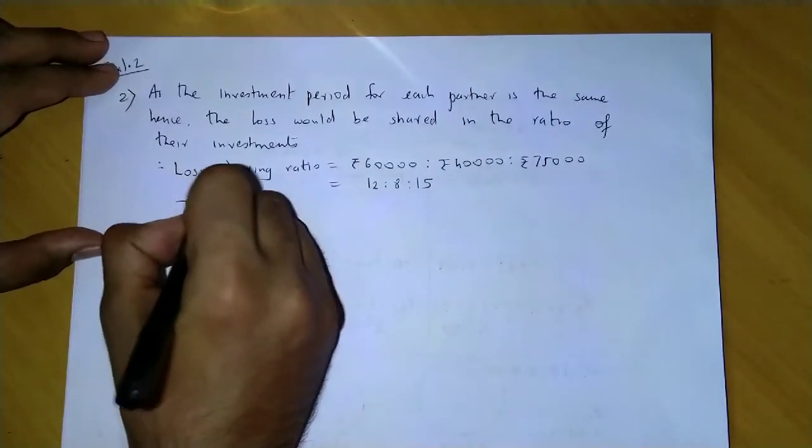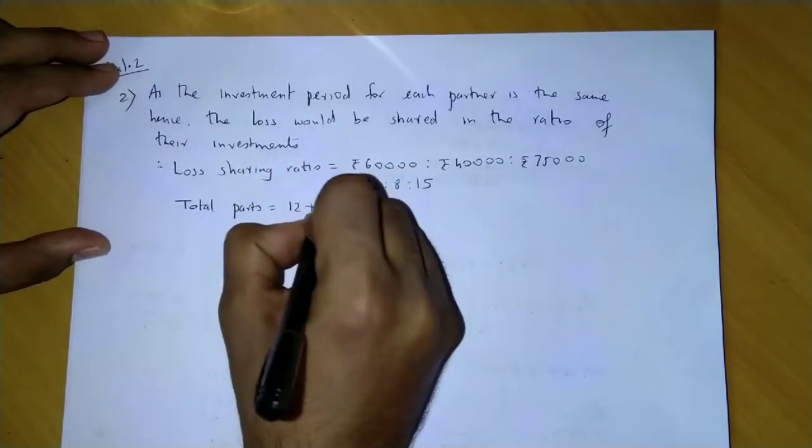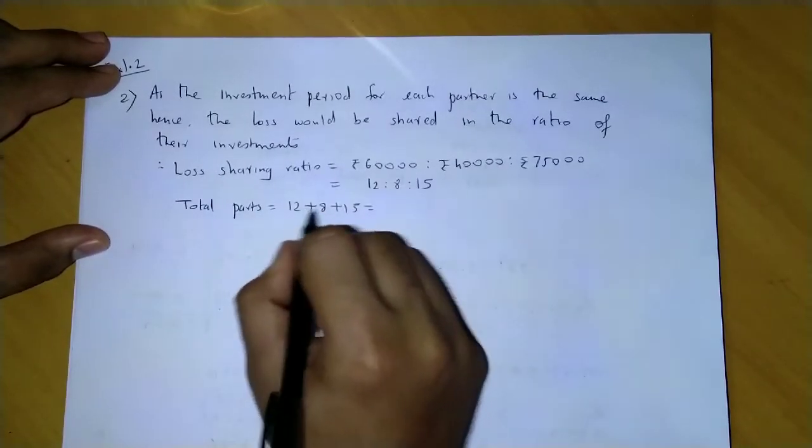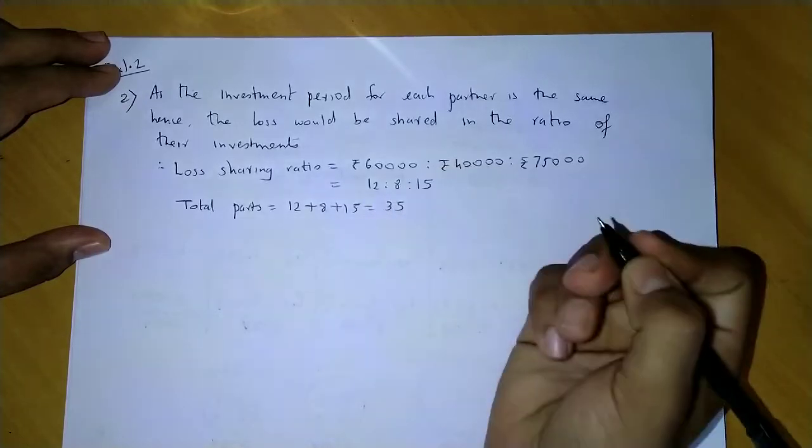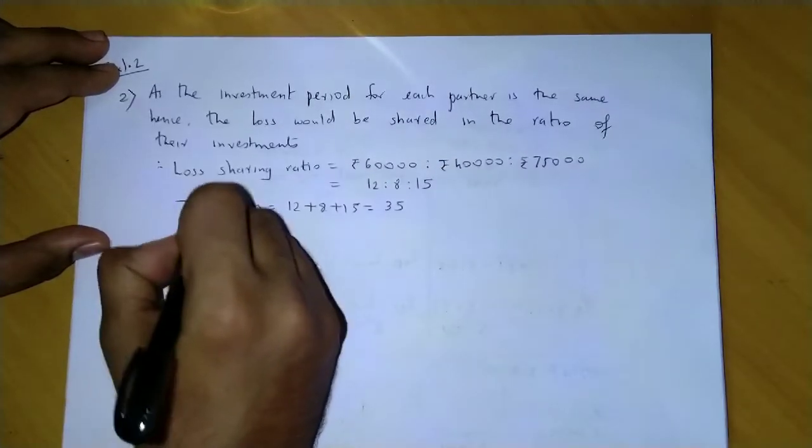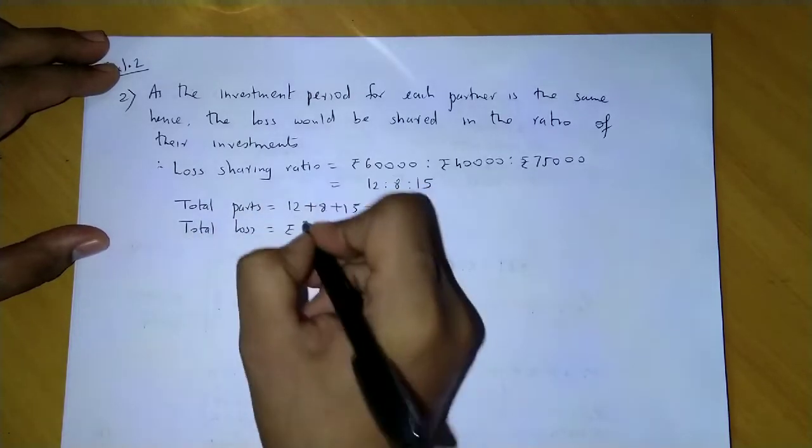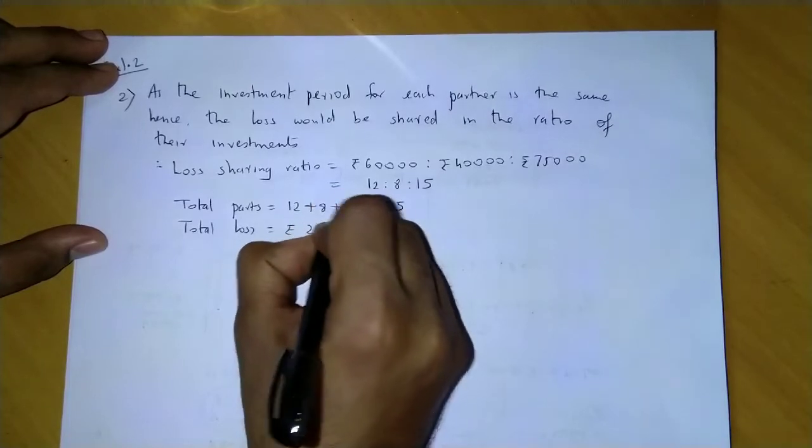Before we write total parts, the total parts are 12 plus 8 plus 15. This is 20 and 15, so that becomes 35. And you have total loss also. Total loss, how much is the total loss? 24,500.